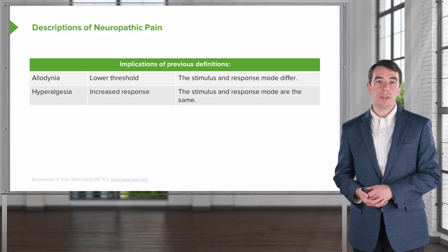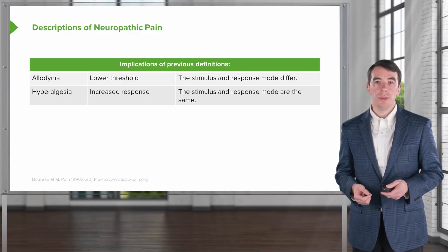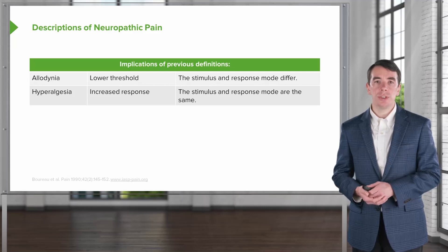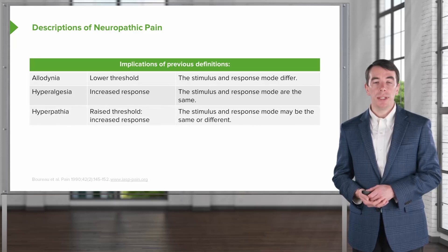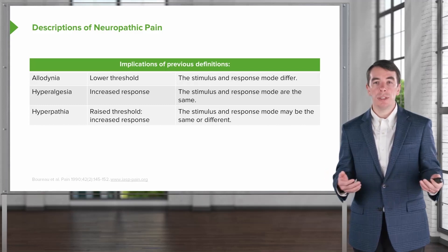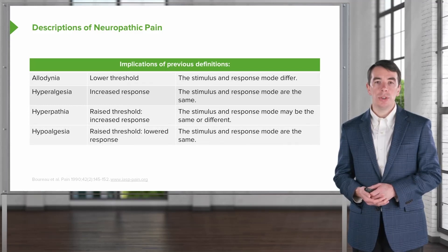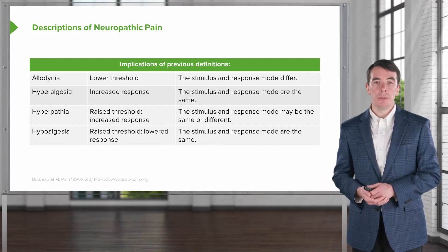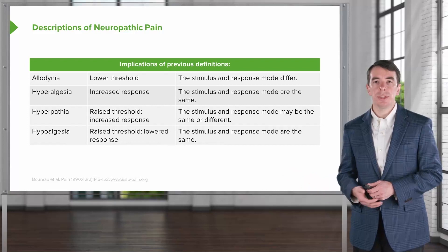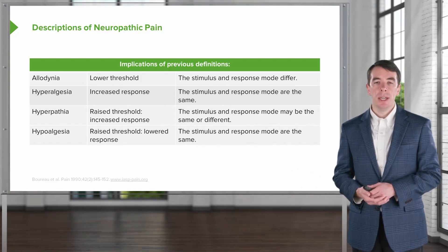Hyperalgesia is characterized by increased response of the nerves. The stimulus and response mode are the same, so there's increased sensation to a tactile stimulus but a more vigorous response. Hyperpathia: nociceptors fire with a raised threshold and increased response, and the stimulus and response mode may be the same or differ. Hypoalgesia involves a raised threshold for firing — the sensory nerves are deadened in some way, they don't feel pain as well, and the stimulus and response modes are typically the same.